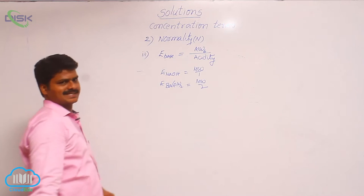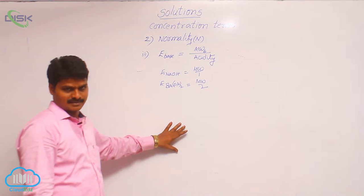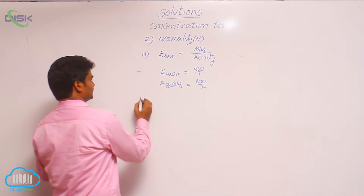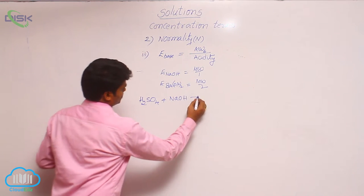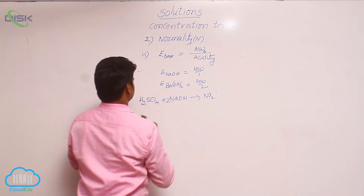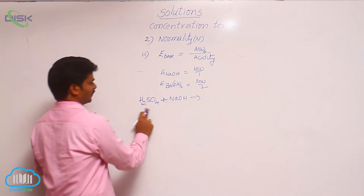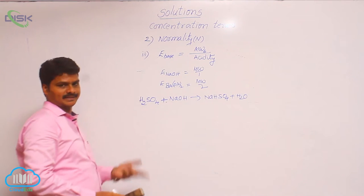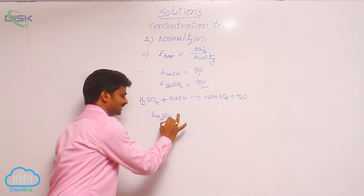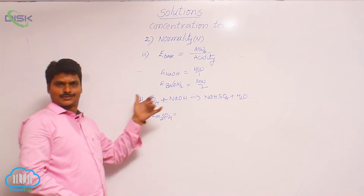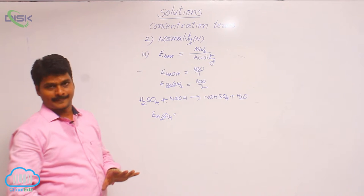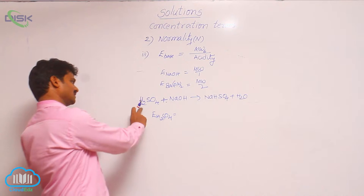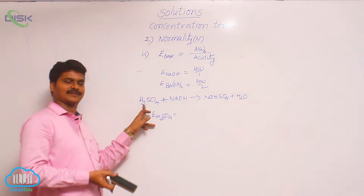If an individual acid or base is given, we use the formula directly. But sometimes reactions are given, and from the reaction we need to find out the equivalent weight and n-factor. For example: H2SO4 + NaOH (1 mol each) reacting to give NaHSO4 + water. The question is: what is the equivalent weight of H2SO4 in this particular reaction? Even though the maximum basicity of H2SO4 is 2, here only 1 hydrogen is replaced by sodium.